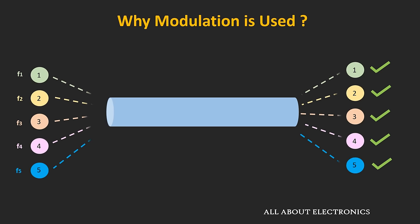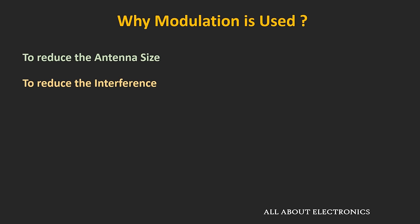Using modulation, interference can be reduced. At the same time, multiplexing of different signals is also possible. The example shown earlier is the example of frequency division multiplexing, where different message signals are modulated at different carrier frequencies, and because of that, they can be transmitted simultaneously.